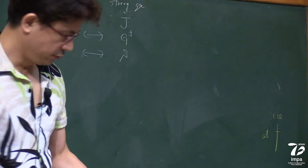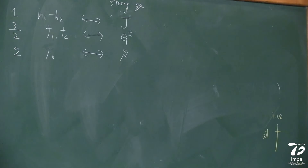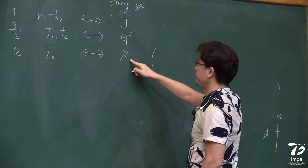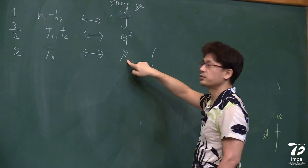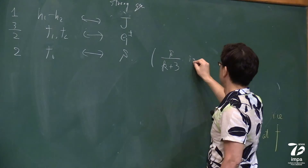There exist strong generators corresponding to this basis. Let me write J for the generator corresponding to H_1 minus H_2, G± for the weight 3/2 generators, and S for the weight 2 generator. The conformal vector usually sits at weight 2, so S corresponds to the conformal vector. In fact, if you divide by k+3, this gives the conformal vector.